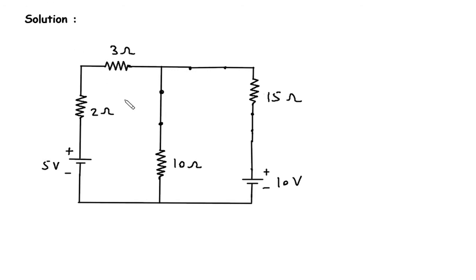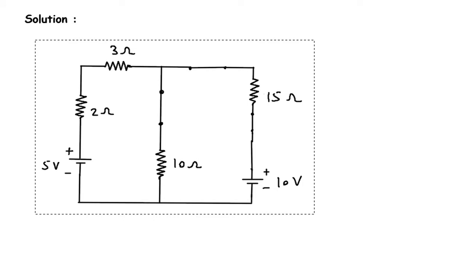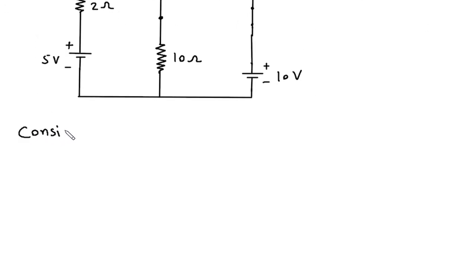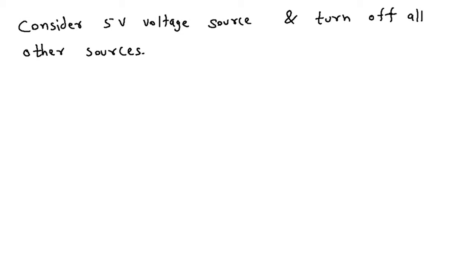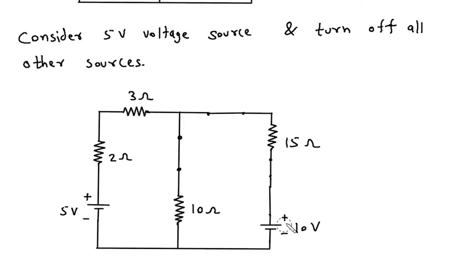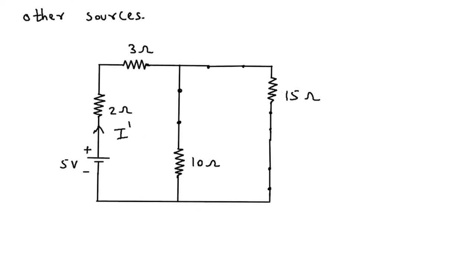Now first we will consider the 5 volt voltage source and turn off the 10 volt voltage source. So if we turn off that voltage source, it will be a short circuit. According to the polarity of this 5 volt voltage source, the current will flow in this direction. Let's say this current is I prime. Now we have to find I prime.